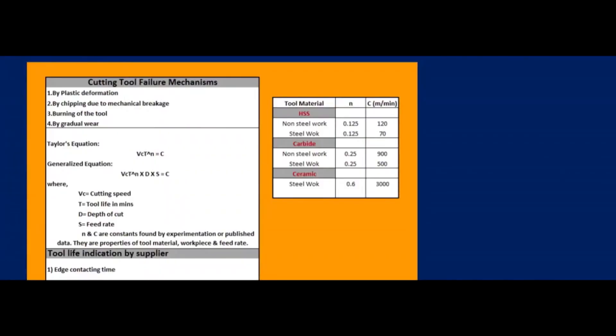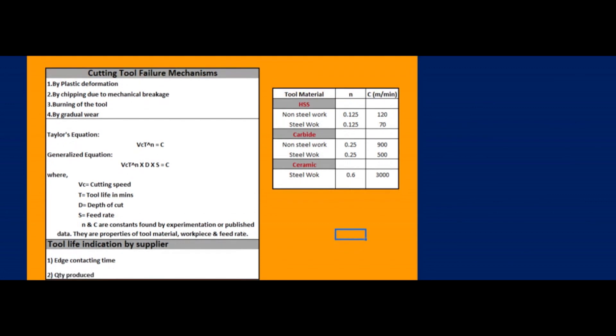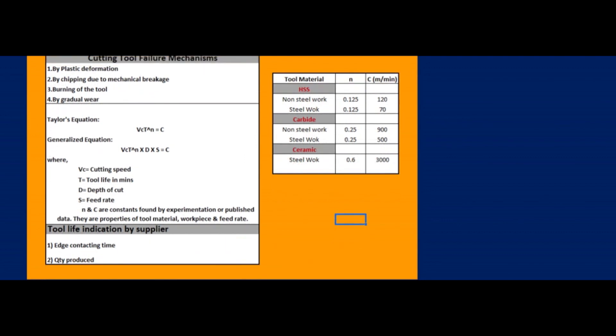There are different mechanisms for cutting tool failure: by plastic deformation, by chipping due to mechanical breakage, burning of tool, and by gradual wear. Following will be the Taylor's equation for tool life.